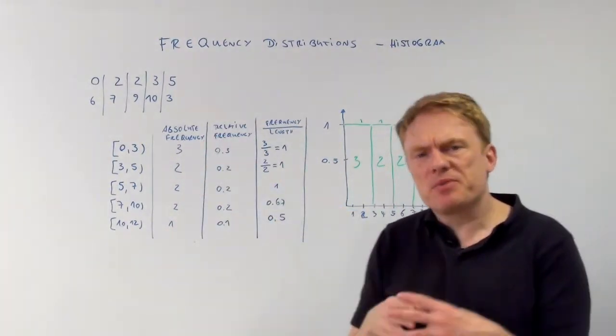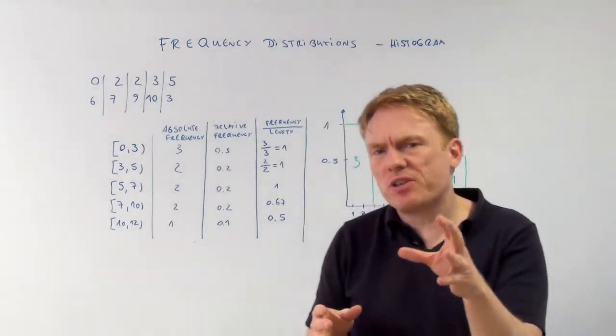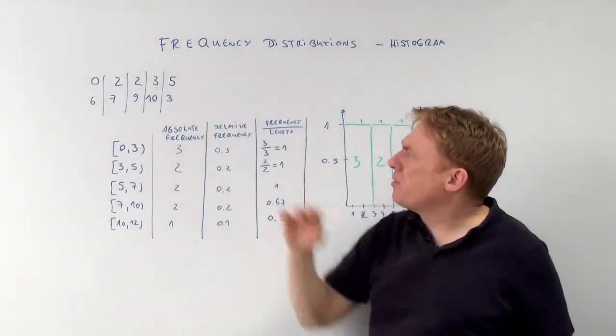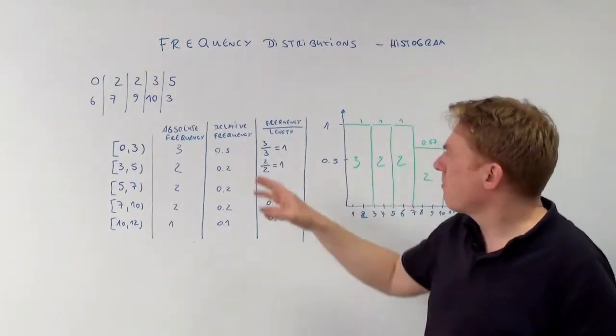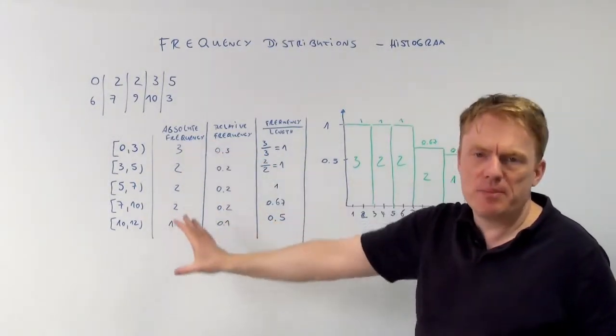If you want to have the absolute frequency, you have to just count the numbers that are here in the ungrouped data. That was the absolute frequency.